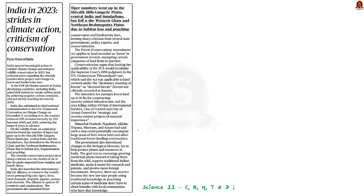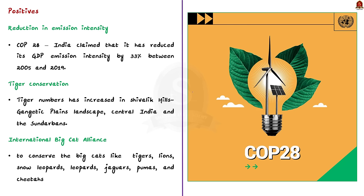Look at this article — it is like a progress report of India regarding climate change action and conservation. Let us look at the content in detail. First, the positives: in 2015 during the Paris Climate Conference, India announced its Nationally Determined Contribution to reduce emission intensity by 30 to 35% compared to 2005 levels. India achieved this target 11 years in advance.